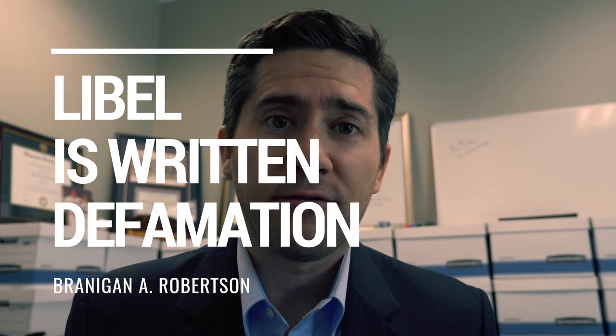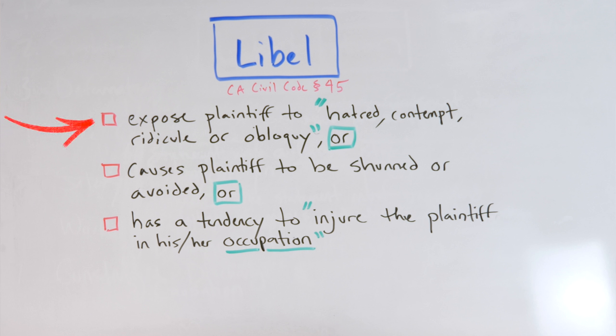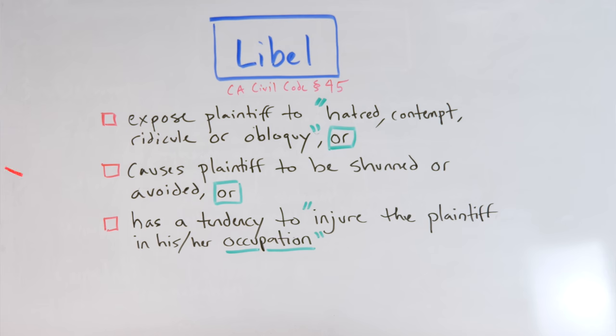Libel is the written form of defamation and obviously requires those five elements we just discussed. But California Civil Code section 45 gives us some additional insight. It says that the defamatory statement must expose the plaintiff to hatred, contempt, ridicule, or obloquy, or cause the plaintiff to be shunned or avoided, or has a tendency to injure the plaintiff — and remember, we're usually talking about the employee in his or her occupation. That last subsection applies a lot in employment cases.